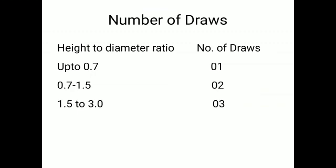The number of draws depends upon the height-to-diameter ratio. If h/d is up to 0.7, the total number of draws will be 1 — meaning in a single draw we can get the finished shell. If the h/d ratio is between 0.7 and 1.5, we require 2 draws for that cup to be drawn.